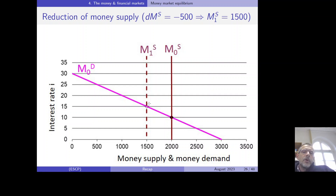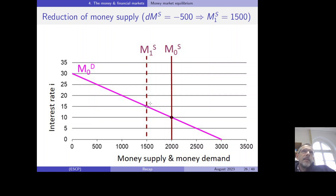Now that we understand these relationships, in Chapter 5 we can model the investment function more realistically. We assume that investment depends on the interest rate in a negative way: when the central bank increases the interest rate, investment will be lower, and when it decreases the interest rate, investment will be higher.